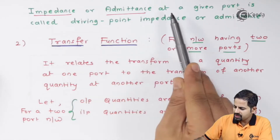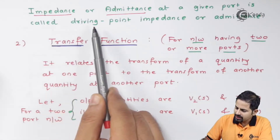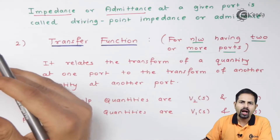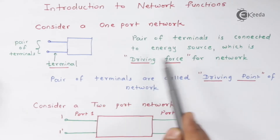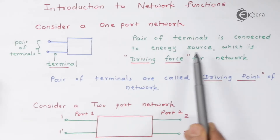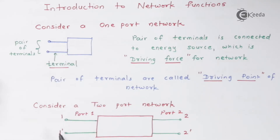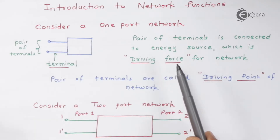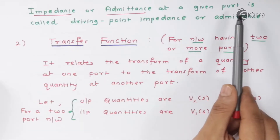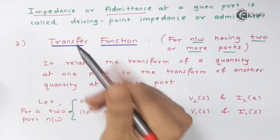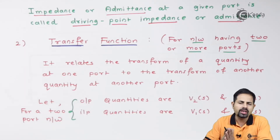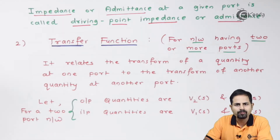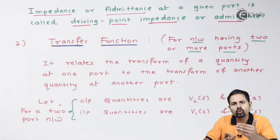Impedance or admittance at a given port is called driving point impedance or driving point admittance, because at that particular port the pair of terminals is connected to an energy source — the driving force. We will see what the transform impedance looks like for resistance, inductor, and capacitor in another video, as this is just the introduction part. Now we move to transfer function.